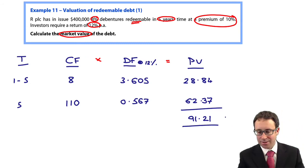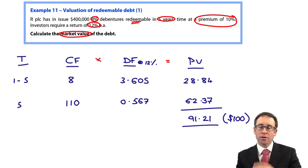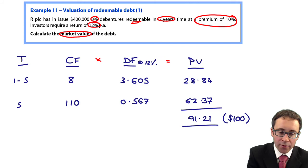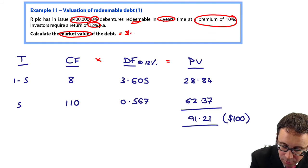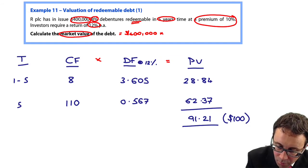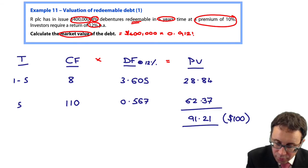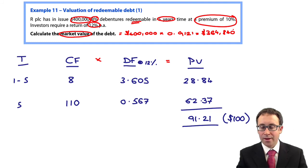If I add those together, 28.84 plus 62.37, does that give me 91.21? Again, remember that is 91.21 per a block of $100 debentures. If we therefore have 400,000, to work out the market value, we'll take 400,000, multiply it by 0.9121. Does that give you 364,840? There we go.